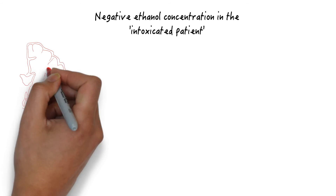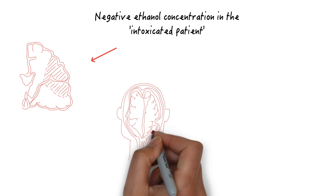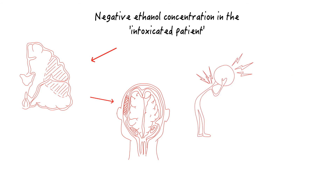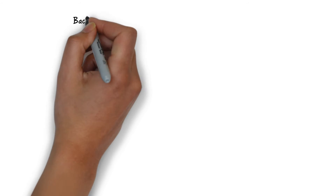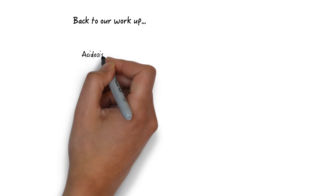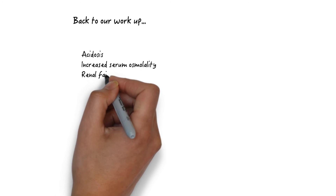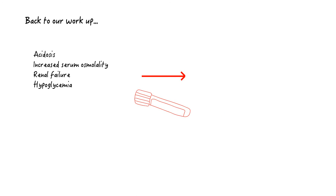The differential diagnosis is broad and includes CNS abnormalities such as stroke, bleed, or CNS infections such as meningitis, but should also include the toxic alcohols. Toxic alcohol ingestion can cause acidosis, increased serum osmolality, renal failure, and hypoglycemia. Evaluate the patient with a VBG, metabolic panel, and serum osmolality, in addition to serum ethanol concentration.